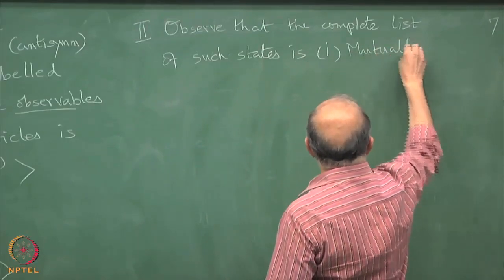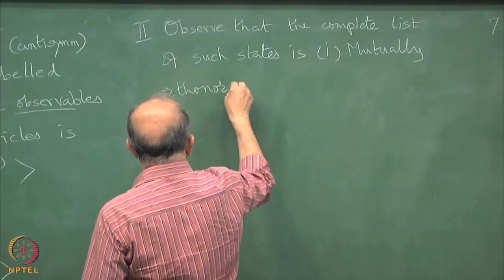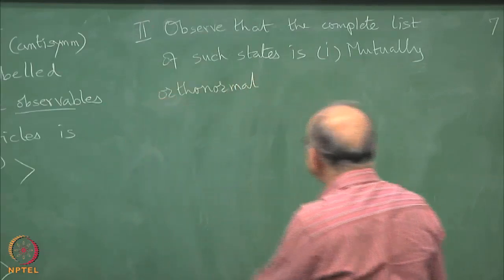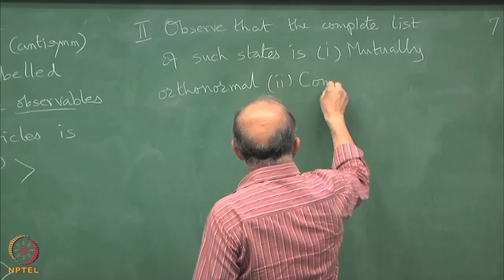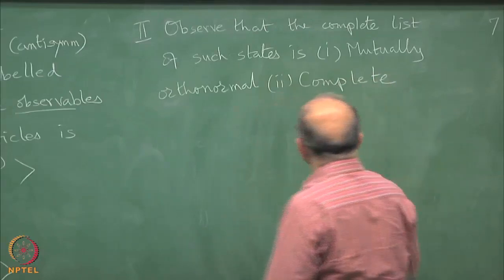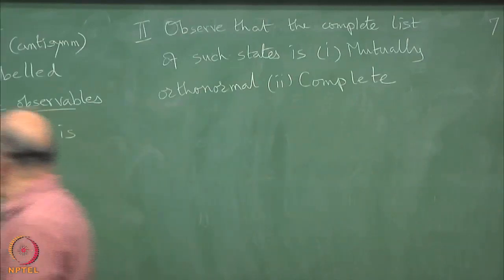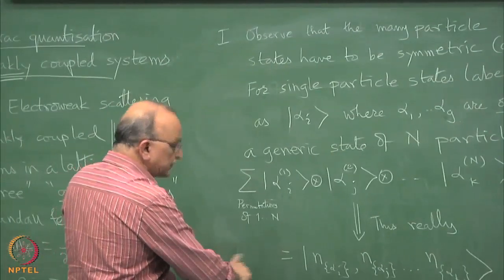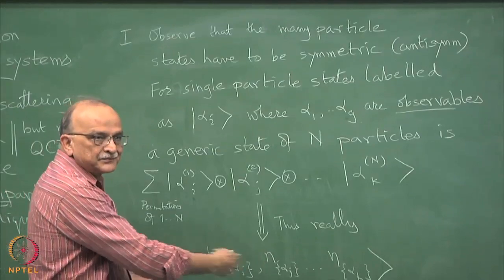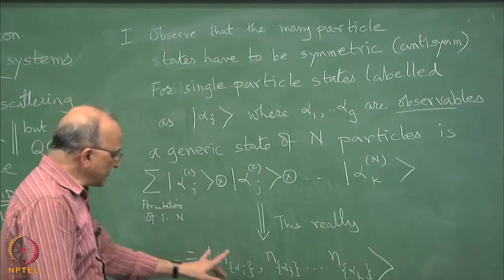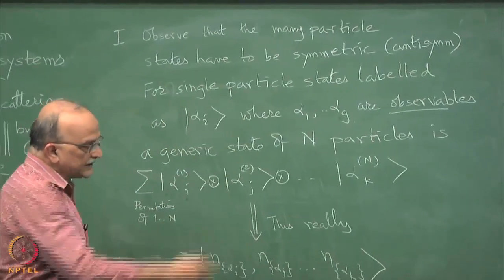We observe that such states are the complete list of such states is mutually orthogonal, orthonormal we will say because if they are equal then of course it gives 1 and is complete. Because they are mutually orthogonal because if the number in any slot, if I take expectation value of something else then number in any slot is different then it will give 0.